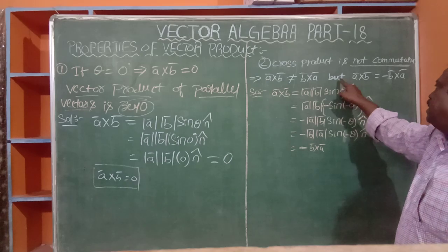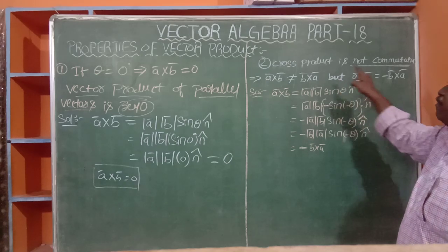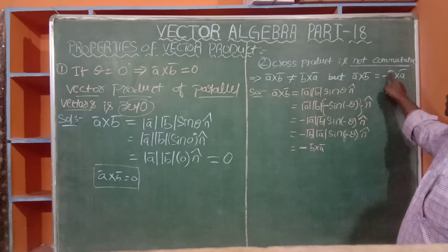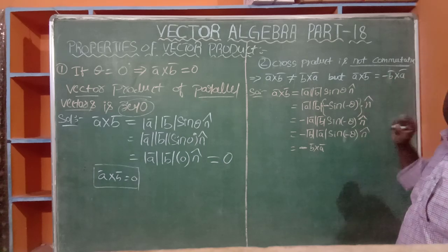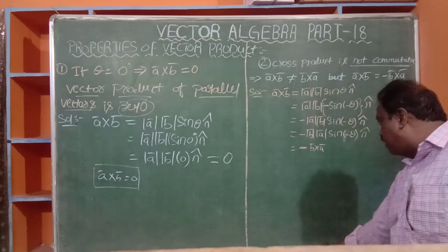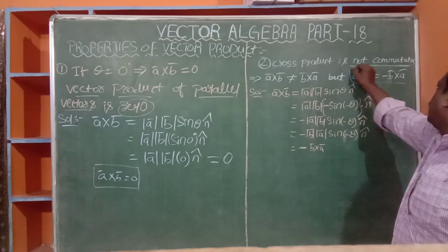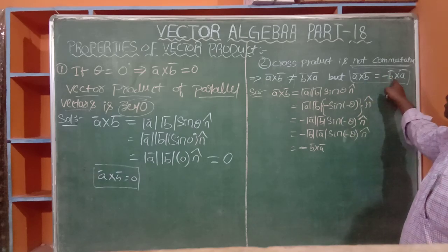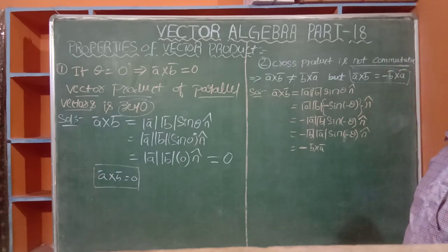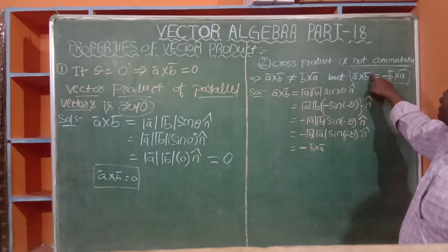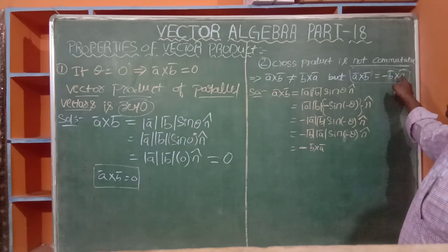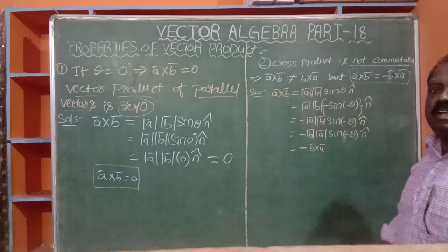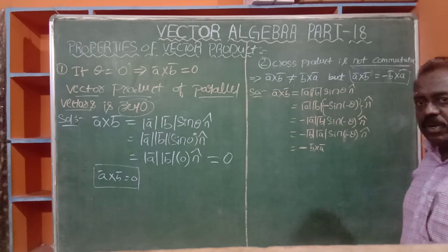However, A-bar cross B-bar is not equal to B-bar cross A-bar, but it may equal minus B-bar cross A-bar. This is very, very important. A-bar cross B-bar = −(B-bar cross A-bar). So the cross product is not commutative, but it is equal with a negative sign.